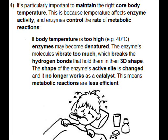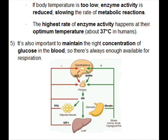If body temperature is too high — for example 40°C — enzymes may become denatured. The enzyme molecules vibrate too much, which breaks the hydrogen bonds that hold them in their 3D shape. The shape of the enzyme's active site changes and it no longer works as a catalyst, making metabolic reactions less efficient. If body temperature is too low, enzyme activity is reduced, slowing the rate of metabolic reactions. The highest rate of enzyme activity happens at their optimum temperature, about 37°C in humans.